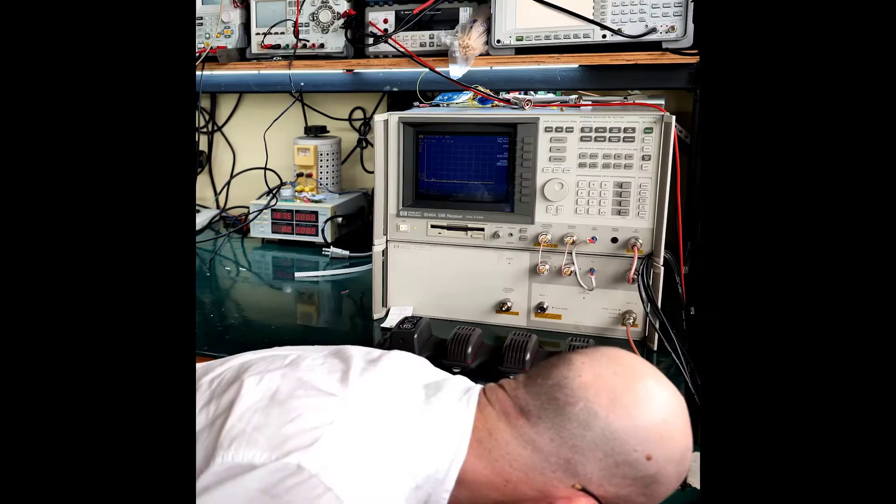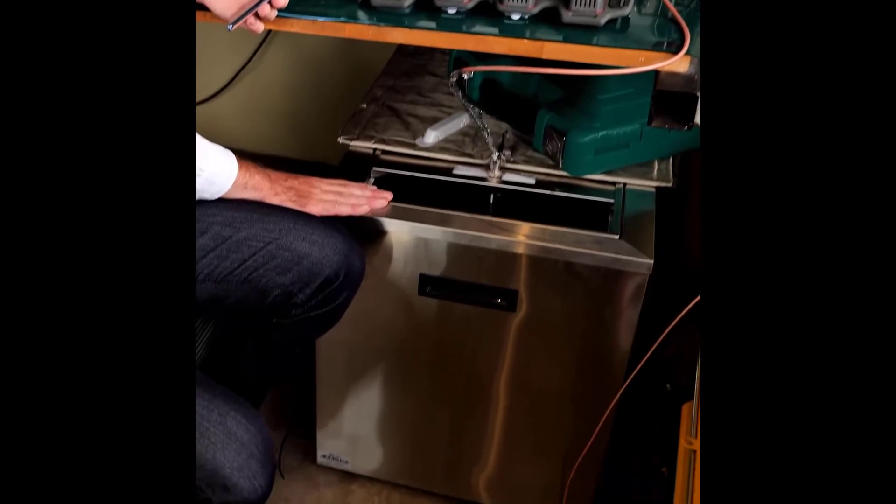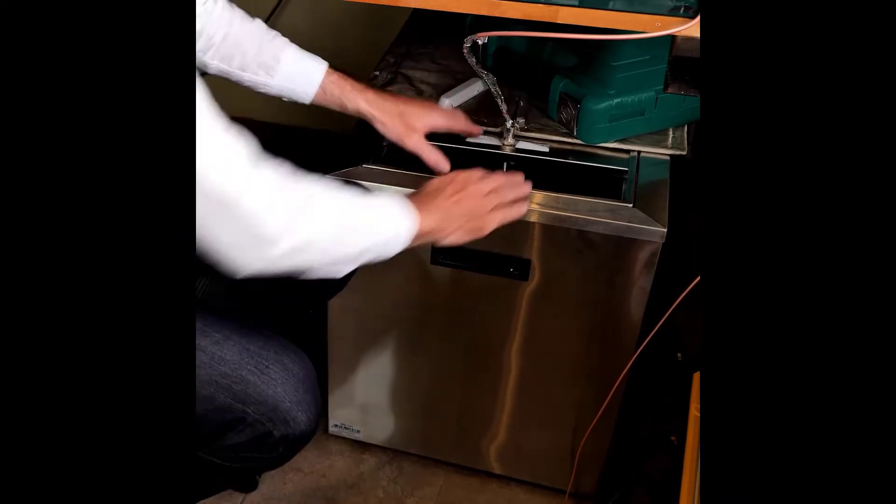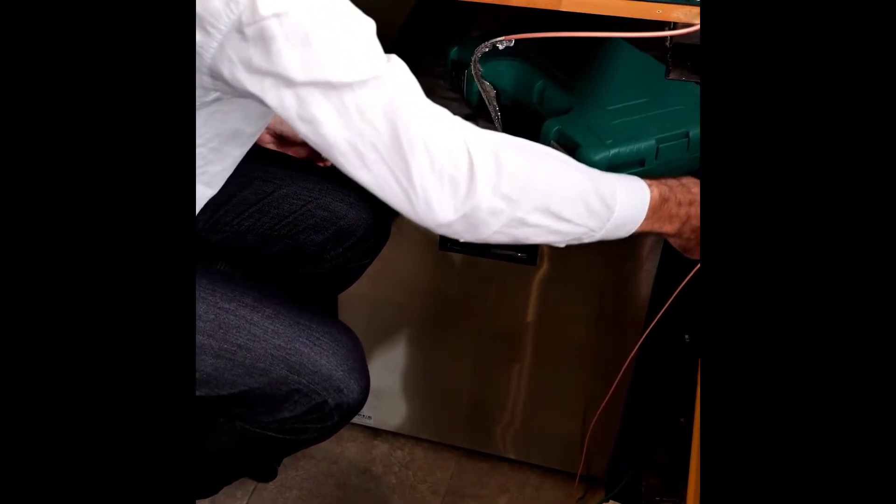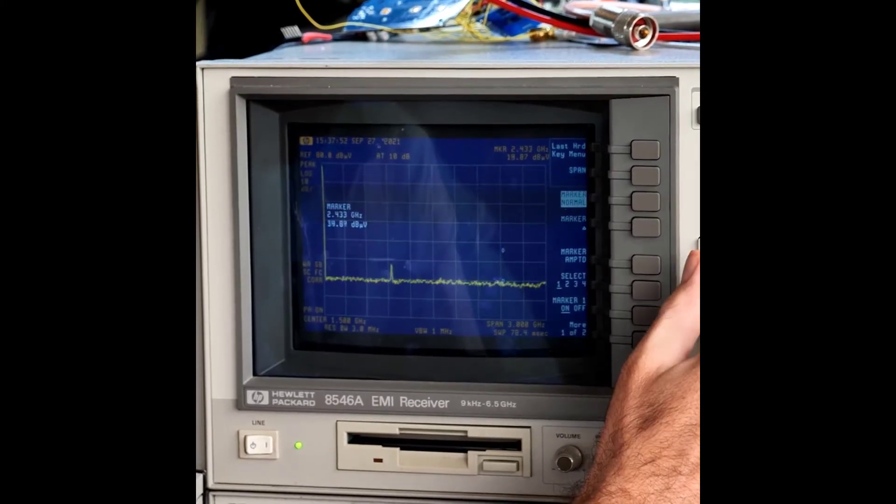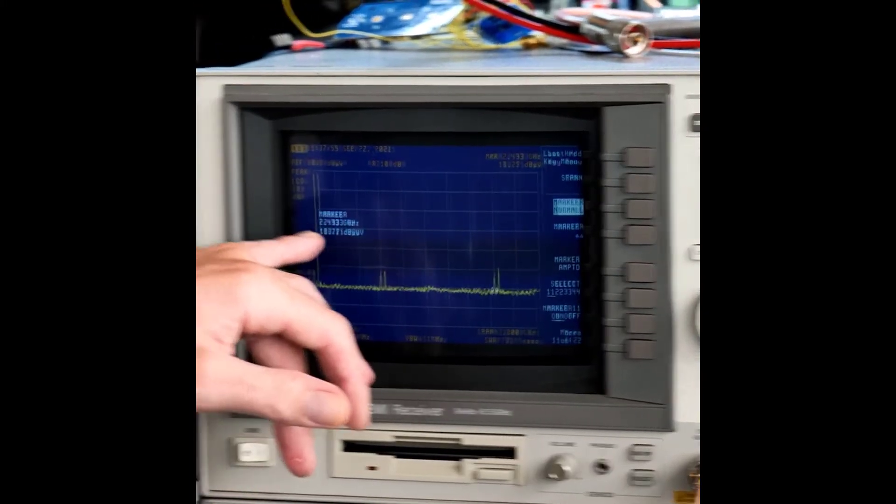The first thing I'm going to do is put a cell phone in my test box. It's made of stainless steel, double layer. Then we close the lid and the top. Over here we have 2.433 gigahertz, this is the Wi-Fi band. Because my cell phone is in there, it's trying to connect on Wi-Fi and you can see that by the Wi-Fi peaks that we get.